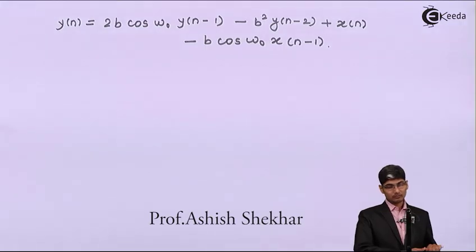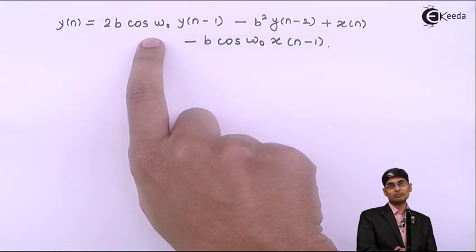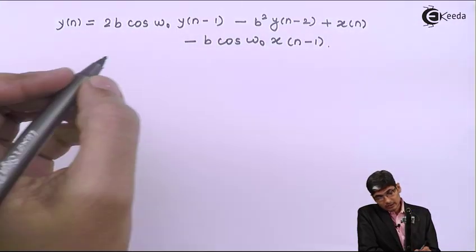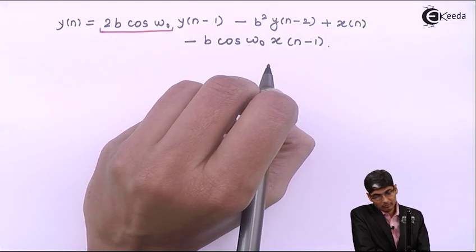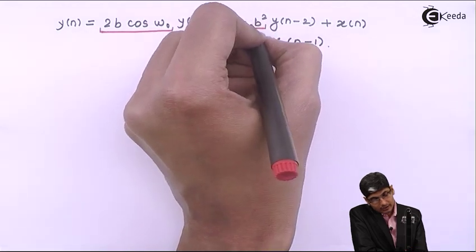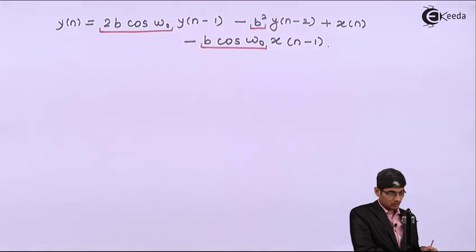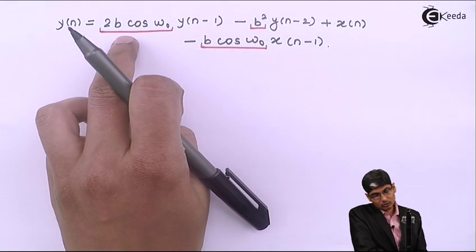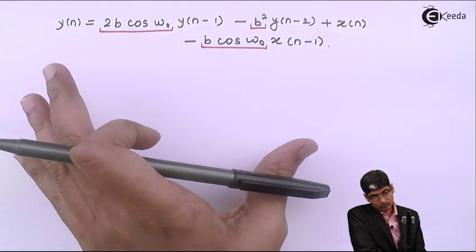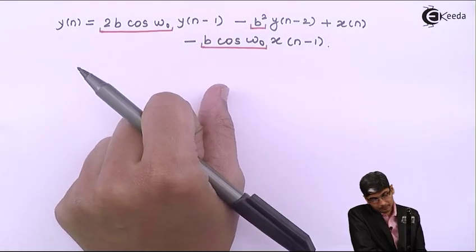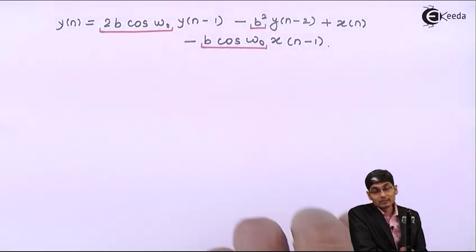For the given problem, students always make the mistake of considering y(n-1) as part of cos(ω₀). In this problem, this is a constant coefficient associated with y(n-1). The second constant is b². Here there is no constant, but here again there is one constant of b·cos(ω₀). So now we have three constant terms: 1, 2b·cos(ω₀) with y(n-1), minus b², and minus cos(b·ω₀). Don't make this mistake in analyzing the problem — that's why this problem is asked many times in exams.